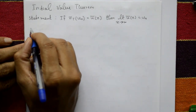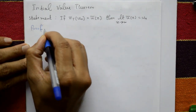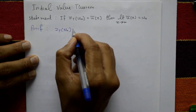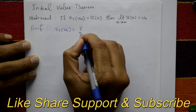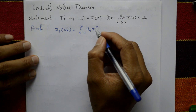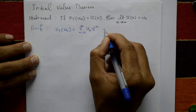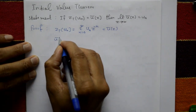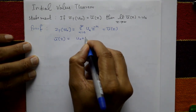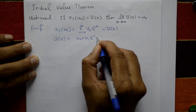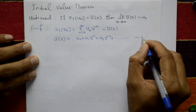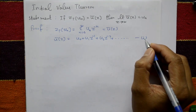Proof: The Z-transform of u(n) is equal to the summation from n equals zero to infinity of u(n) times z to the minus n, which gives U̅(z). So U̅(z) is equal to, putting n equal to zero, one, two, three and so on: u₀ plus u₁ z⁻¹ plus u₂ z⁻² plus so on. This is equation number one.